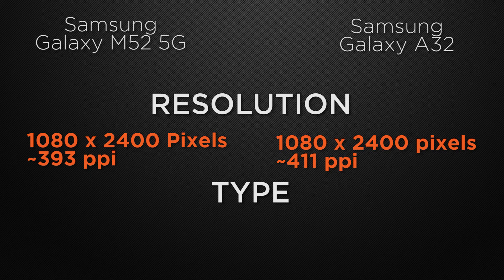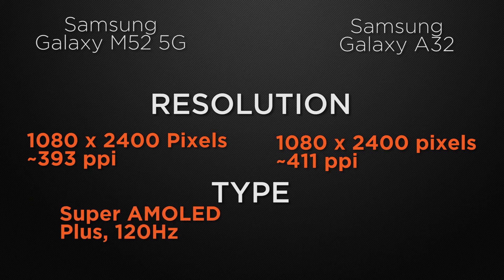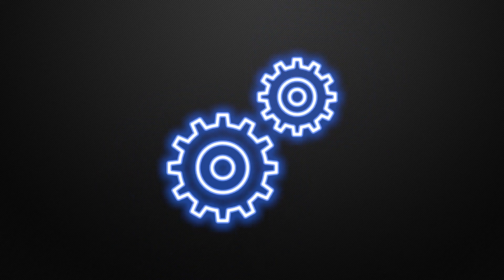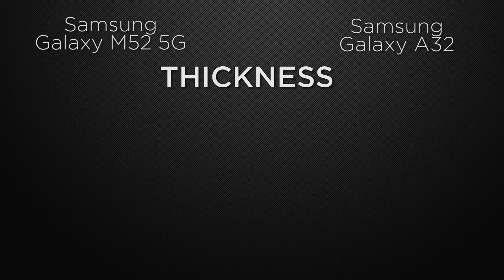About the display type, the M52 has a Super AMOLED display with a 120Hz refresh rate whereas the A32 has a Super AMOLED display with a 90Hz refresh rate. The winner here is the M52 because it has 20Hz more refresh rate which can make transitions smoother.